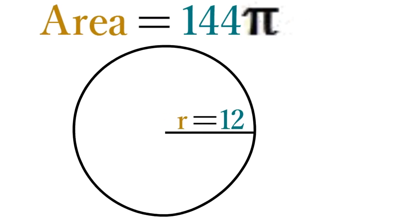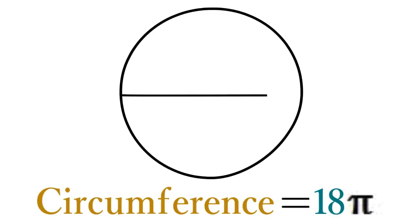When you know the circumference of a circle, you can find its diameter simply by dropping pi from this value. For example, if a circle has a circumference of 18 pi, its diameter is 18.